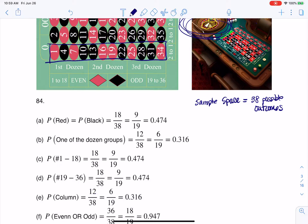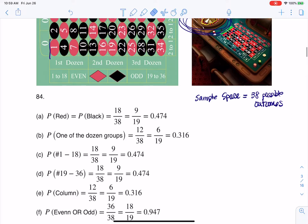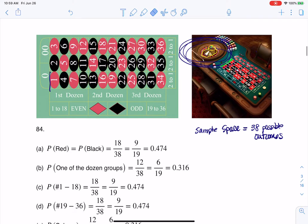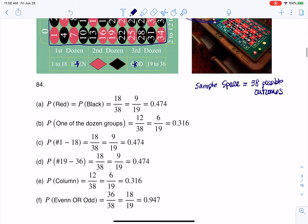And then part F says, what's the probability of betting on an even or an odd number? And they're excluding the zeros. So if I bet on even or odd, if we want to kind of take a look as to what that's saying is, you're going to bet on any of these numbers coming up, even or odd, right? And really what that would mean is you'd put a chip here and you'd put a chip here at the same time, right? And there are 36 of those numbers out of 38.